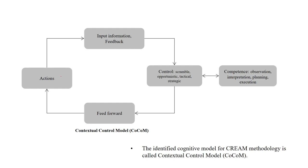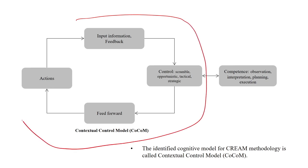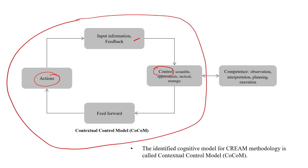The COCOM is a closed-loop system. If you have some kind of action, it gives you information feedback, and based on that feedback you have a control mechanism — all four controls discussed earlier. This then gives further feedback which affects subsequent actions. Everything is based on observation, interpretation, planning, and execution of the result. This is the COCOM or Contextual Control Model.